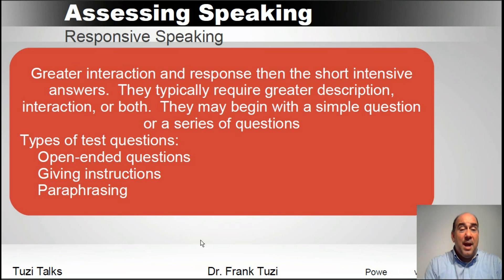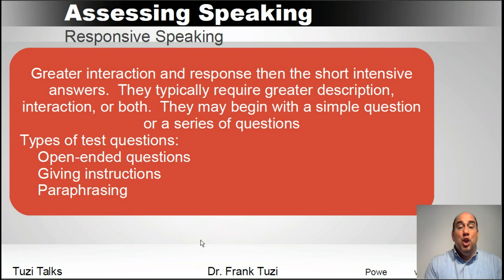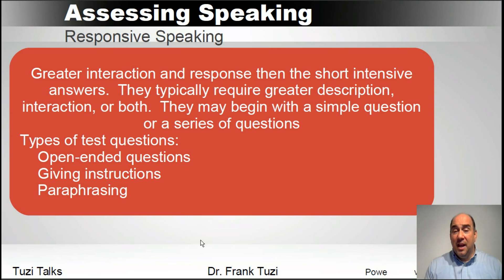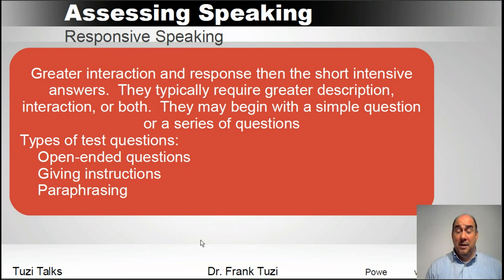As you move up the scale to larger types of conversations, you can have responsive speaking. These are going to be short answers, but with greater interaction and greater response than the intensive level. These are types of questions where you, the assessor, ask a question and then sit back and wait — you let them talk. You want to maintain interest but let them take the lead a little longer. Questions might begin simply or go into a series, but they're often open-ended. They might be giving instructions, doing something a bit more intense, or paraphrasing — for example, they read a book and you want them to tell you what it was about. It's responsive, but larger than just those short answers.